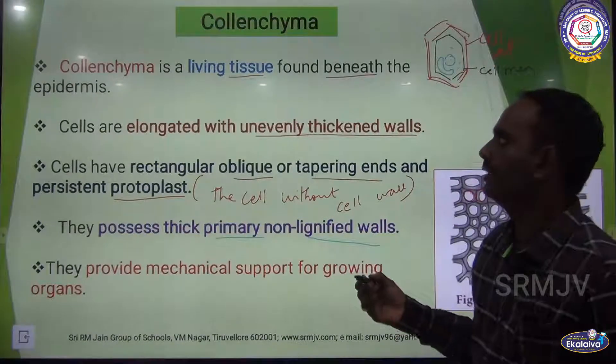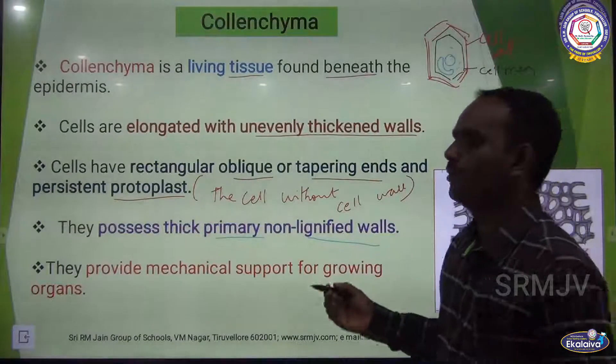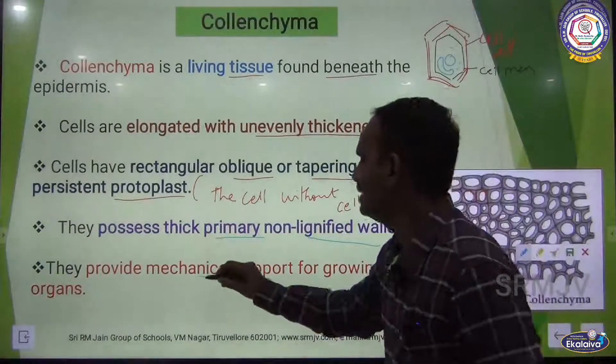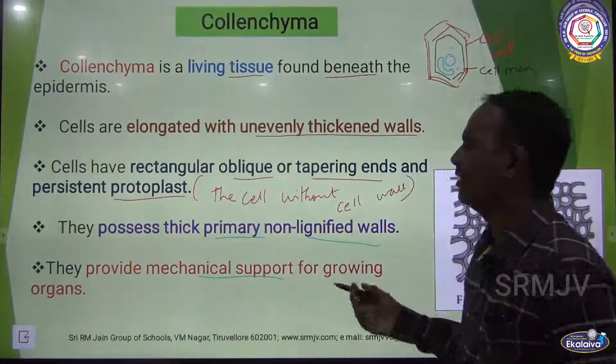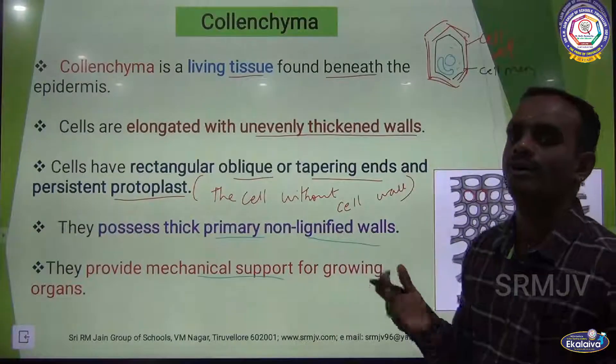Collenchyma cells possess thick primary non-lignified walls, and collenchyma provides mechanical support for growing organs.